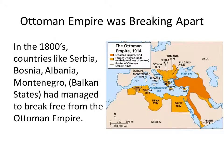Another issue was that the Ottoman Empire was breaking apart. This massive empire included Algeria, Tunisia, Libya, Egypt, Turkey, Greece, Bosnia, Serbia, Romania, and Bulgaria — all breaking apart. Countries like Serbia, Bosnia, Albania, and Montenegro were all what we call Balkan states. These Balkan states not only broke free from the Ottoman Empire, they were looking to form their own country of just Balkan or Slavic states.